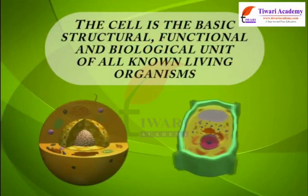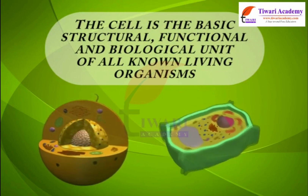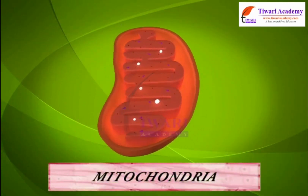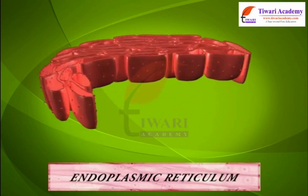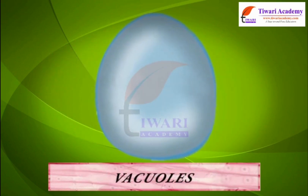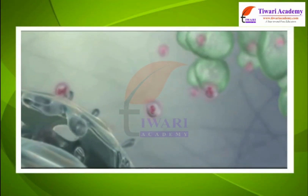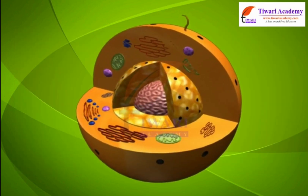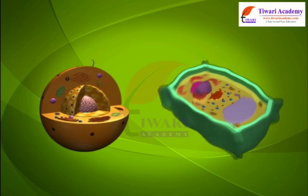The cell is the basic structural, functional, and biological unit of all known living organisms. Cell organelles like mitochondria, endoplasmic reticulum, vacuoles, and others are components of a cell which perform specific functions. They are found at different locations inside a cell, and every kind of cell has different types of cell organelles which perform specific functions.